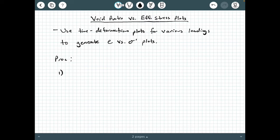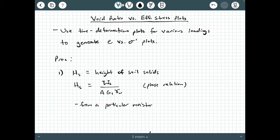The first step is computing the height of soil solids. H sub S equals the weight of soil solids divided by the cross-section area of the specimen times the specific gravity of the soil solids times the unit weight of water. This comes from a phase relation and a particular moisture content.